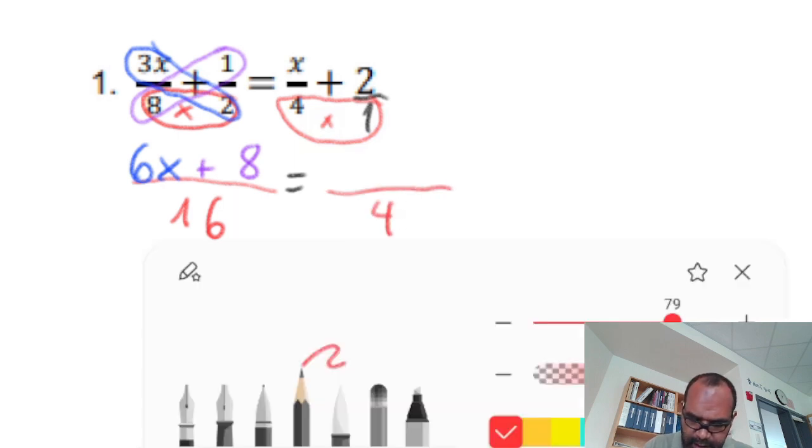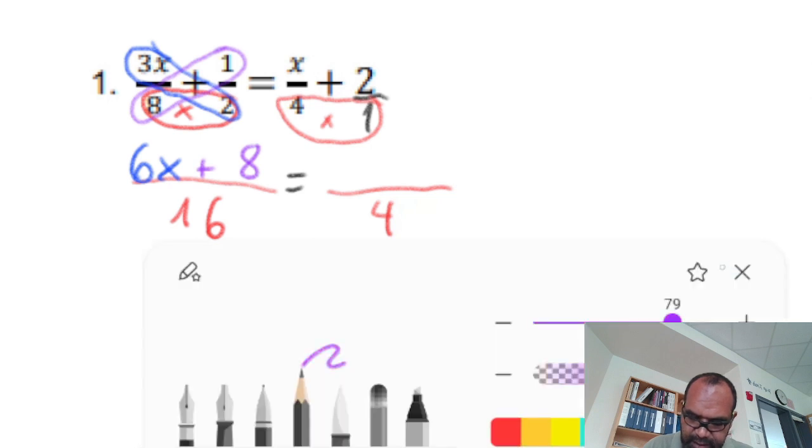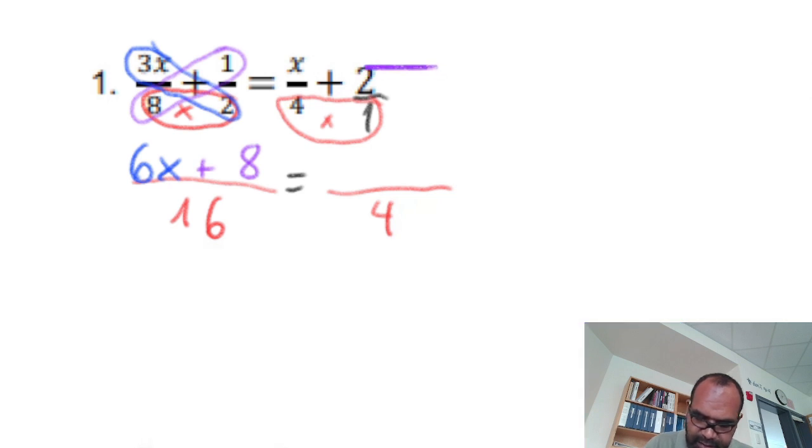Now, the opposite side. Oops. The diagonal here. The first diagonal, it is 2 times 4. 2 times 4. 8.